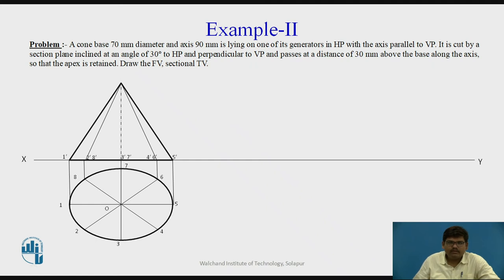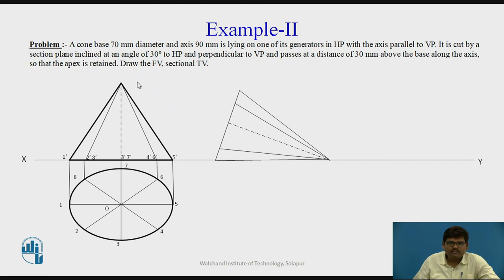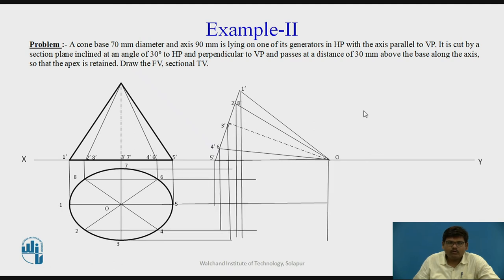Now, moving further, to complete the top view we require the points from this front view as well as the previous top view. We project O from the second front view and the corresponding point O from the previous top view to get this point. Similarly, we project point 1' from the second front view and point 1 from the previous top view to get the corresponding point, and similarly we obtain all the points. We name the points — these are the points in the second top view or the required top view. We join these points and the remaining points, completing the condition given in the question: the cone is lying on one of its generators.